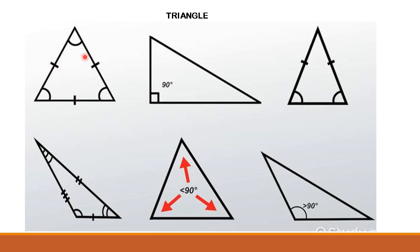In this triangle all the sides are equal. In other triangles the sides may be different. The sides can be different or equal depending on the type of triangle.